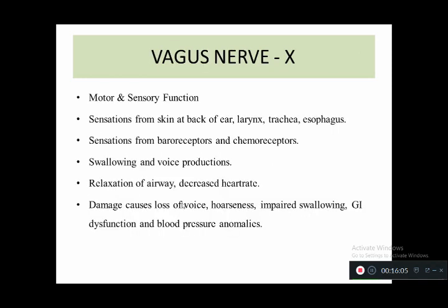The tenth cranial nerve is the vagus nerve. It has dual motor and sensory function. It provides sensation from the skin at the back of the ear, larynx, trachea, and esophagus, as well as from baroreceptors and chemoreceptors. It is responsible for swallowing, voice production, relaxation of the airway, and decreased heart rate. Damage causes loss of voice, hoarseness, impaired swallowing, GI dysfunction, and blood pressure abnormalities.